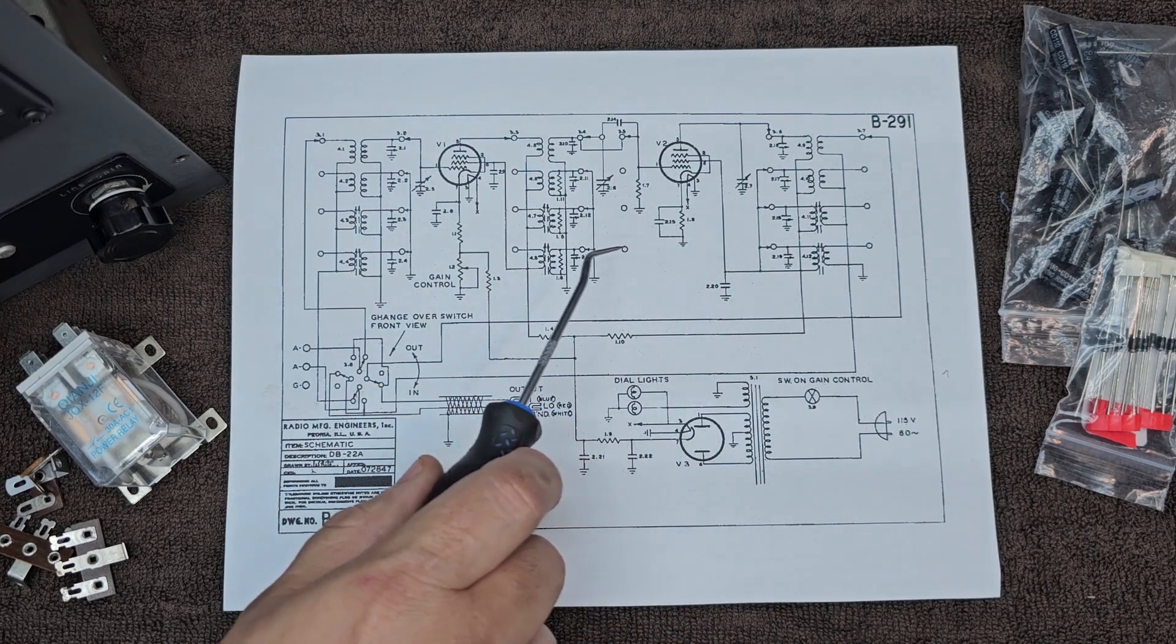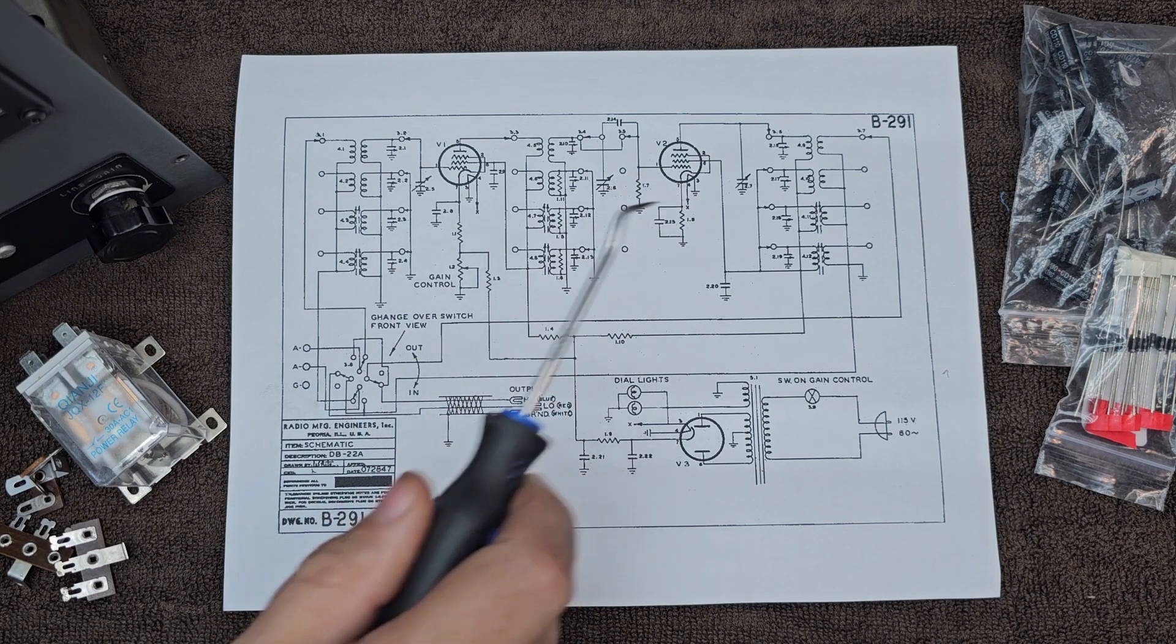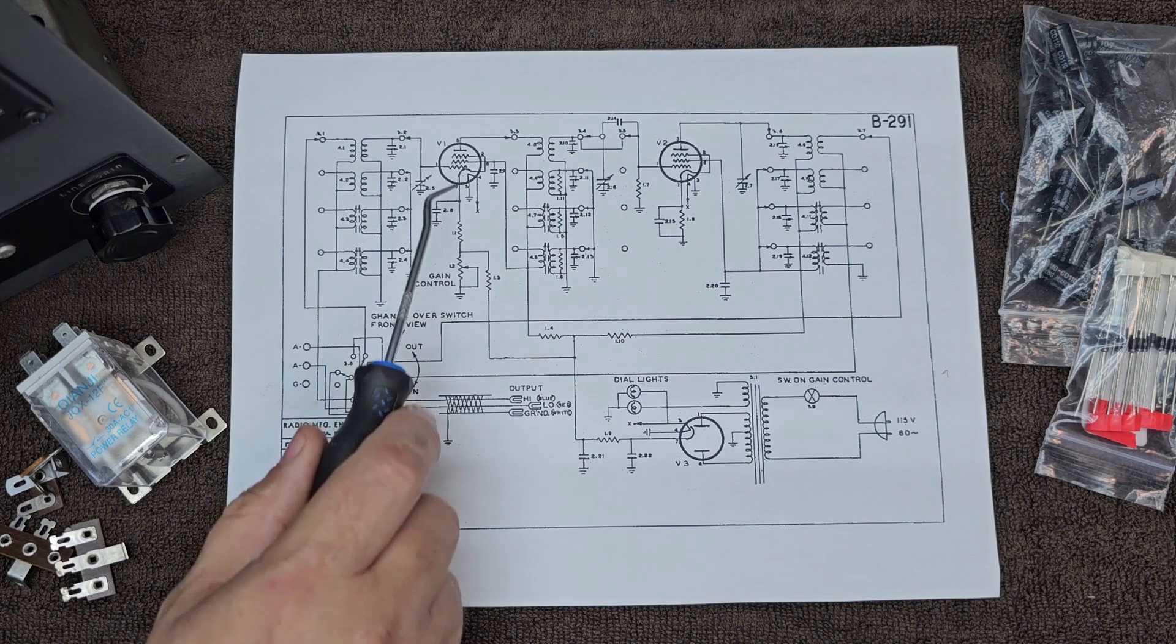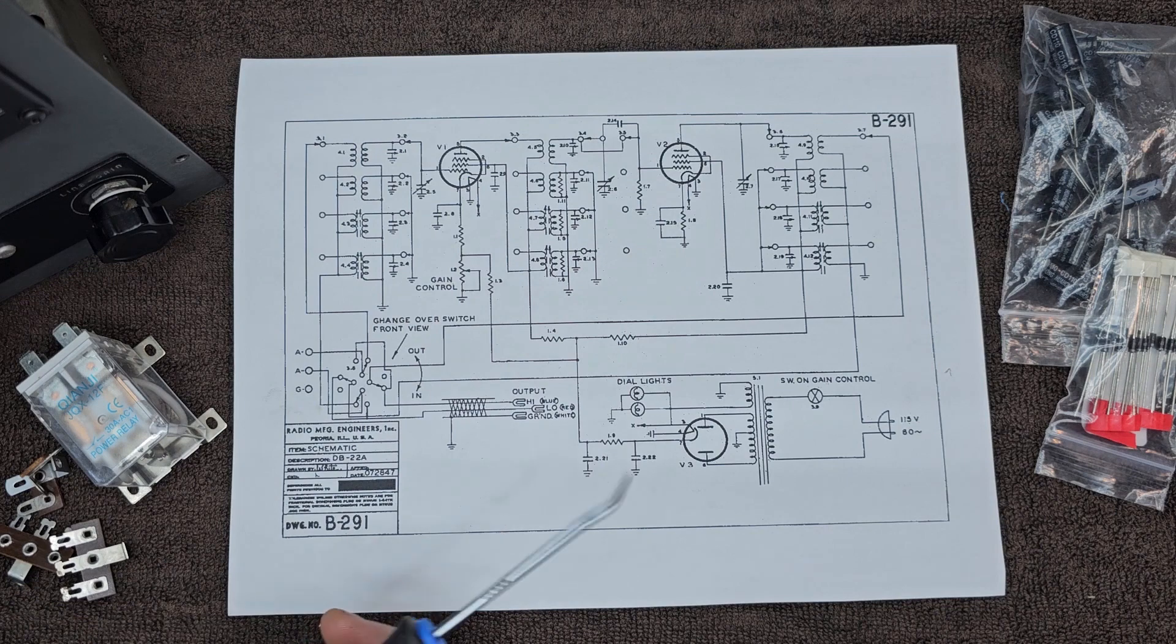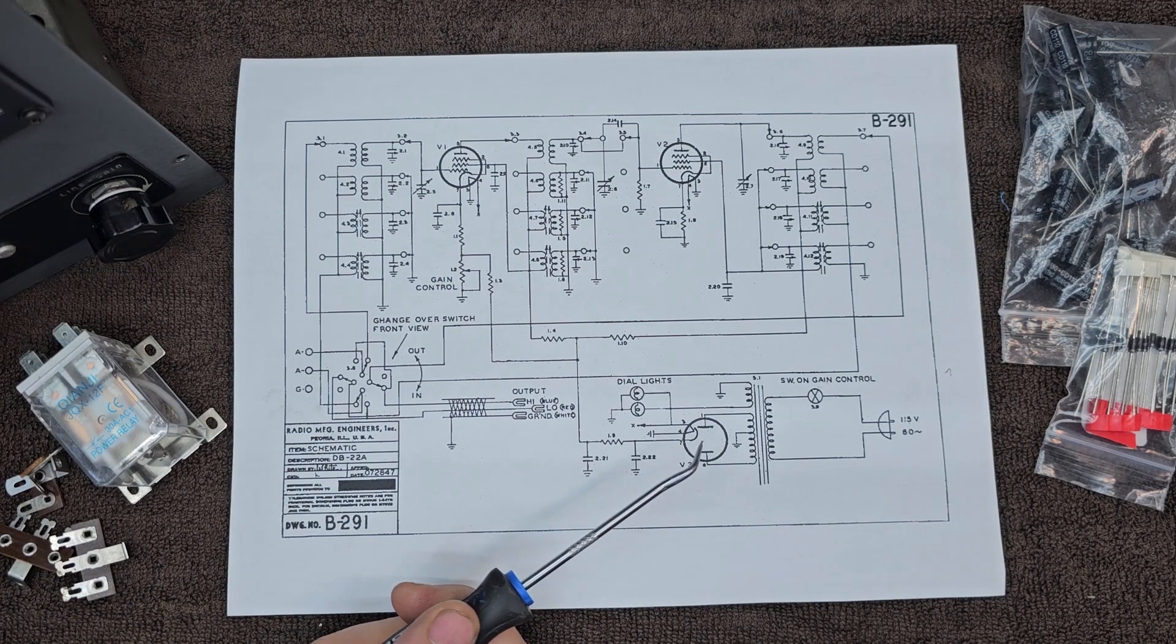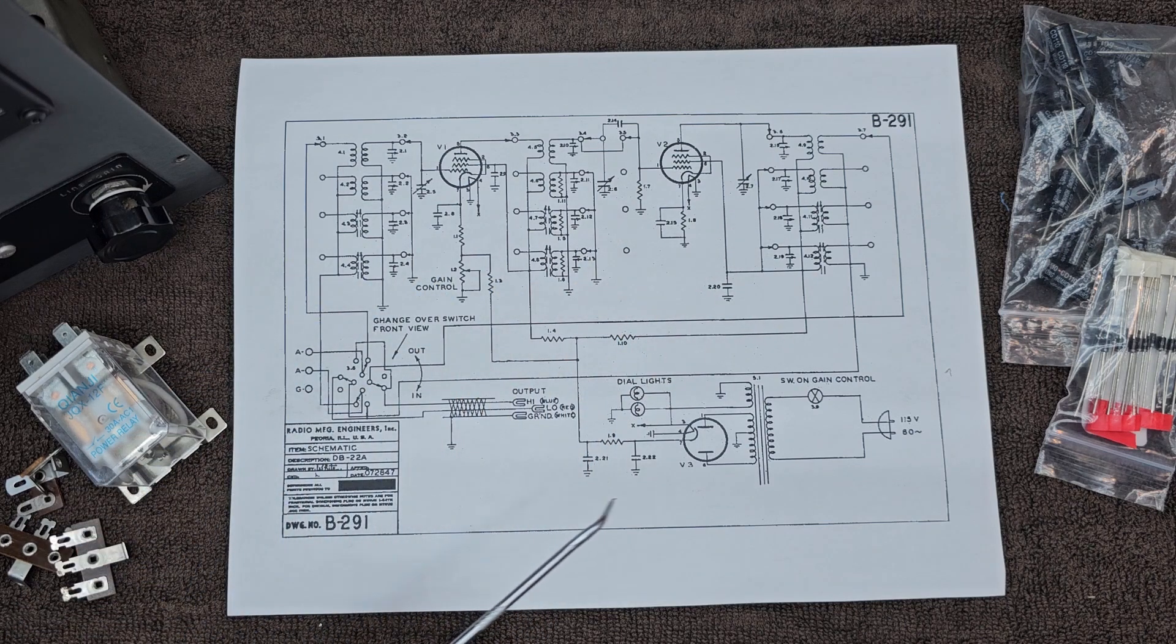We can take our signal, strip out a lot of the noise, amplify it, and present it to the receiver. There's also a gain control so you can turn the gain on the first RF tube up. This here is the basic power supply.